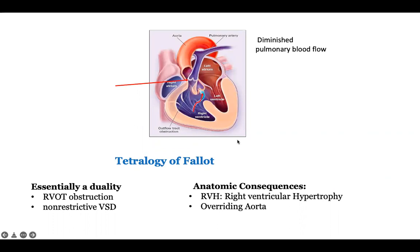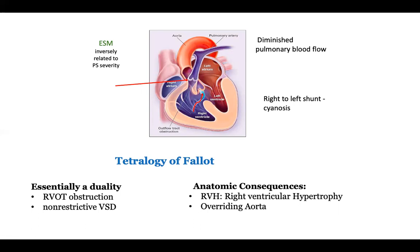Because there is decreased pulmonary blood flow due to pulmonary stenosis, there is diminished pulmonary blood flow. At the level of the VSD the shunt is right to left, and the aorta receives blood from both ventricles. There is an ejection systolic murmur due to flow across the pulmonary valve. The duration of the ejection systolic murmur is inversely related to the severity of pulmonary stenosis — severe stenosis gives a short murmur, mild or moderate gives a longer one. The P2 is soft and often not heard, and clinically you hear only a single second heart sound, which is A2.